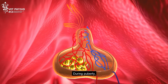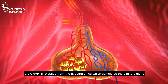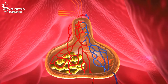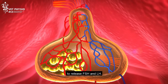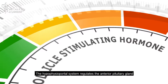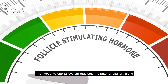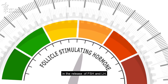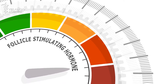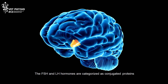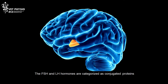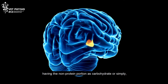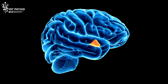During puberty, the GnRH is released from the hypothalamus, which stimulates the pituitary gland to release FSH and LH. The hypophysioportal system regulates the anterior pituitary gland in the release of FSH and LH. The FSH and LH hormones are categorized as conjugated proteins having the non-protein portion as carbohydrate, or simply a glycoprotein.